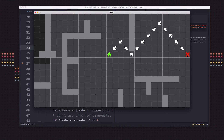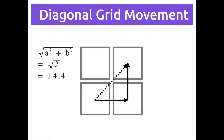That's because diagonal movement isn't the same as orthogonal movement — up and down, left and right. The reason for that has to do with a little bit of trigonometry. When you move on a grid horizontally or vertically, if this is a distance of one, then a diagonal movement, by the Pythagorean theorem, is a movement of a distance of the square root of two, which is around 1.4.